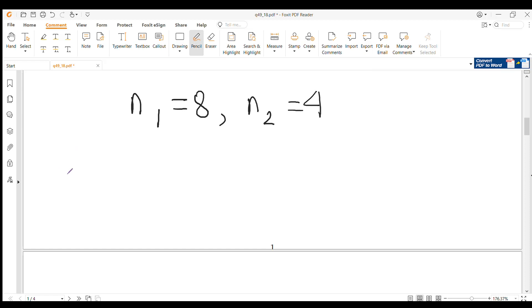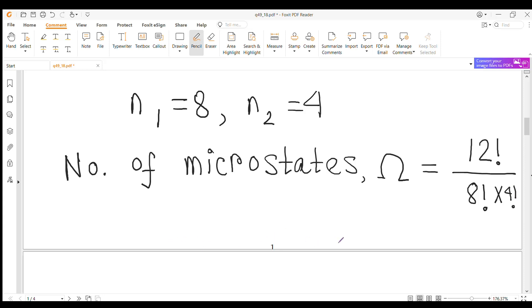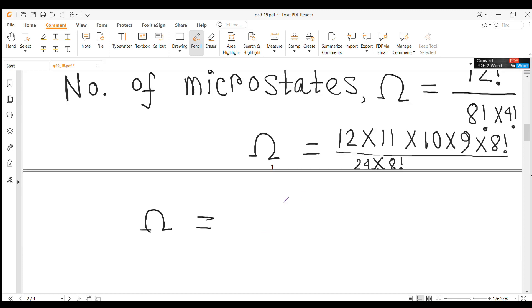So the number of microstates of this ensemble is equal to 12 factorial by 8 factorial times 4 factorial. Now this 12 factorial can be written as 12 times 11 times 10 times 9 times 8 factorial, and the value of 4 factorial is 24. After some simplification, we find that the total number of microstates is equal to 495.